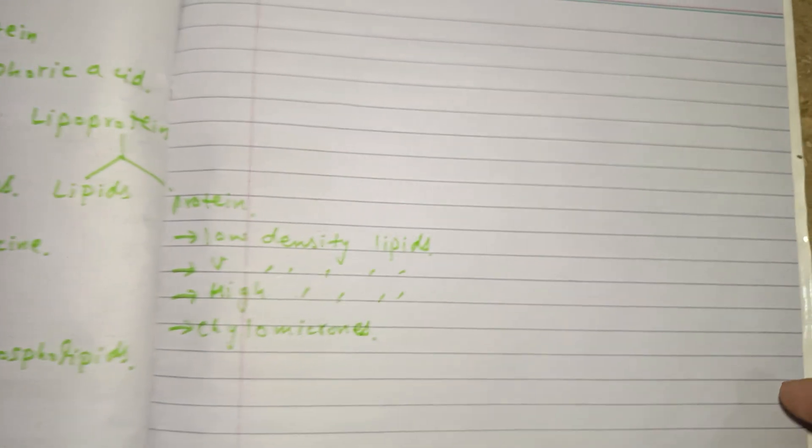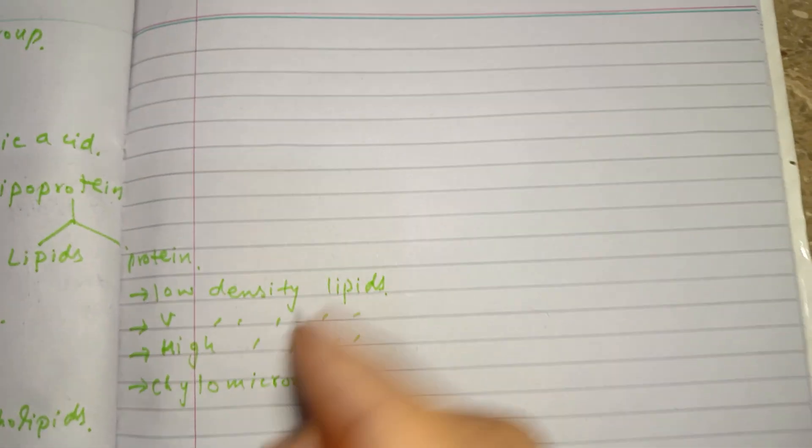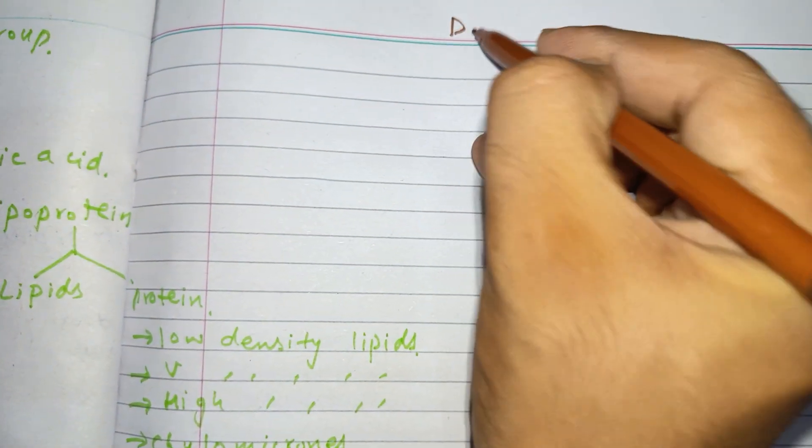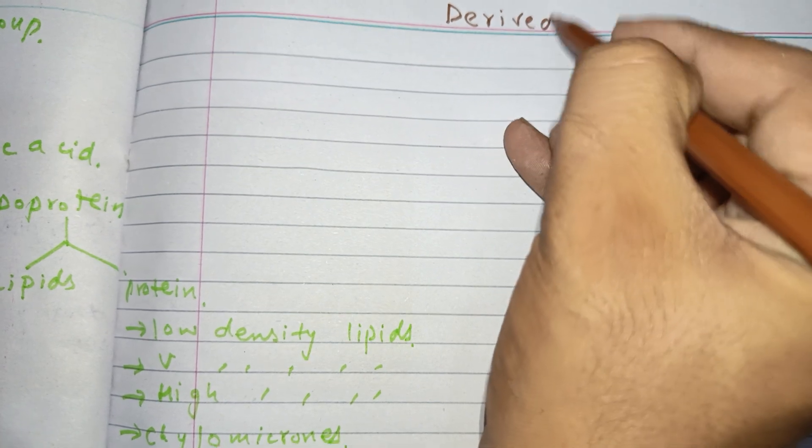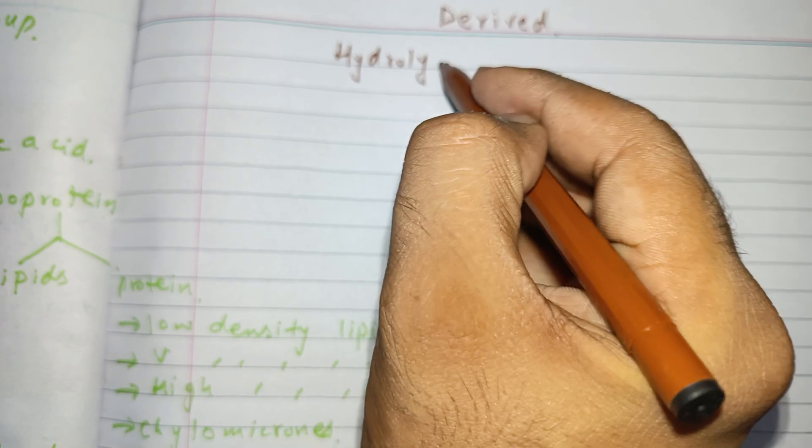The next one is derived lipid. The third category of lipid is derived lipids. Derived lipids are obtained by the hydrolysis of either simple lipid or compound lipid.